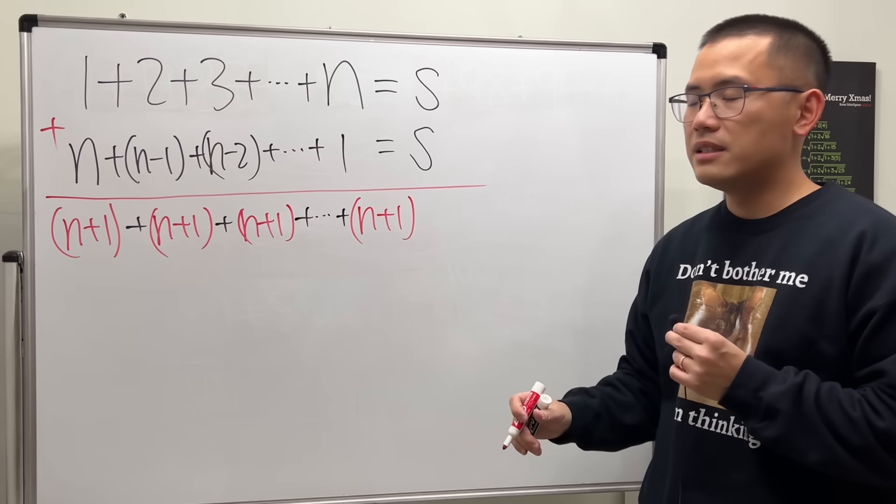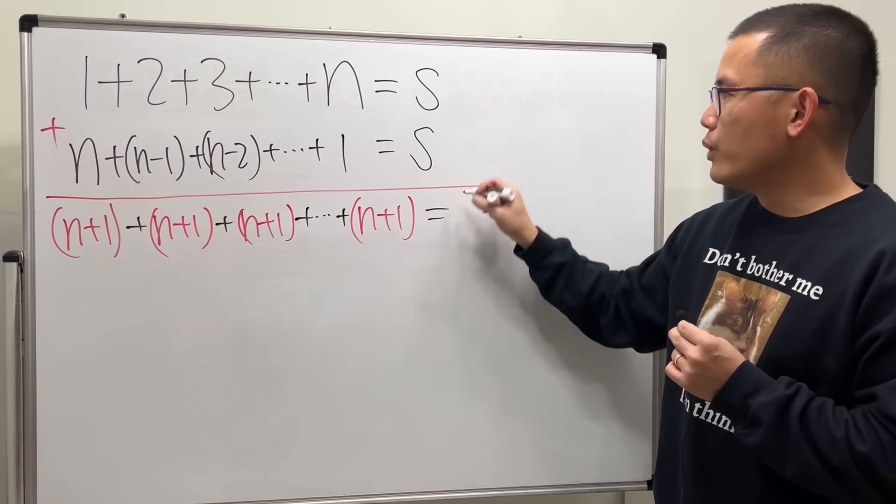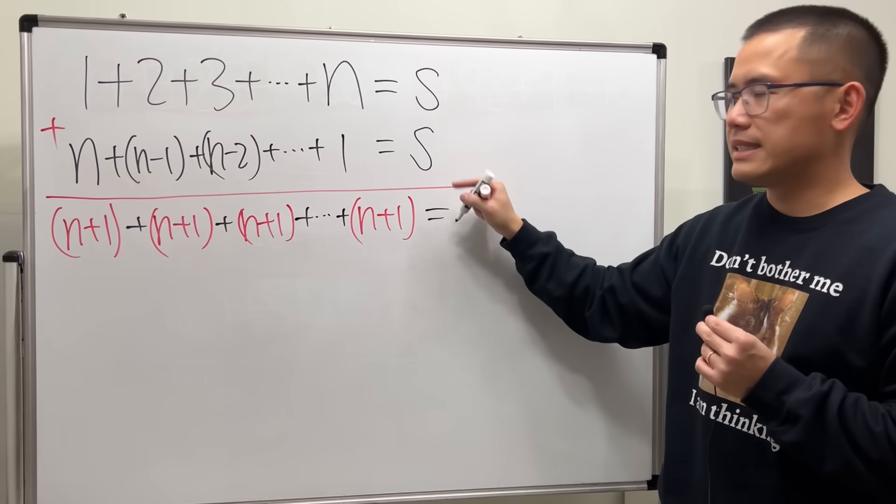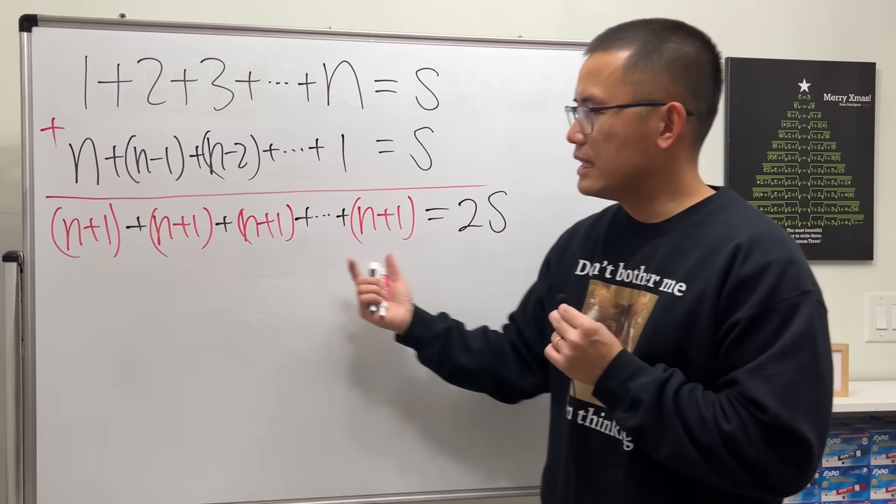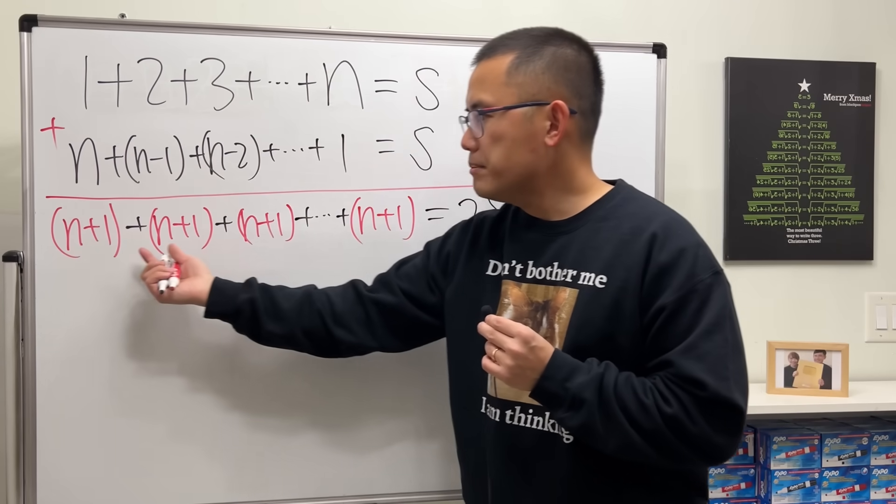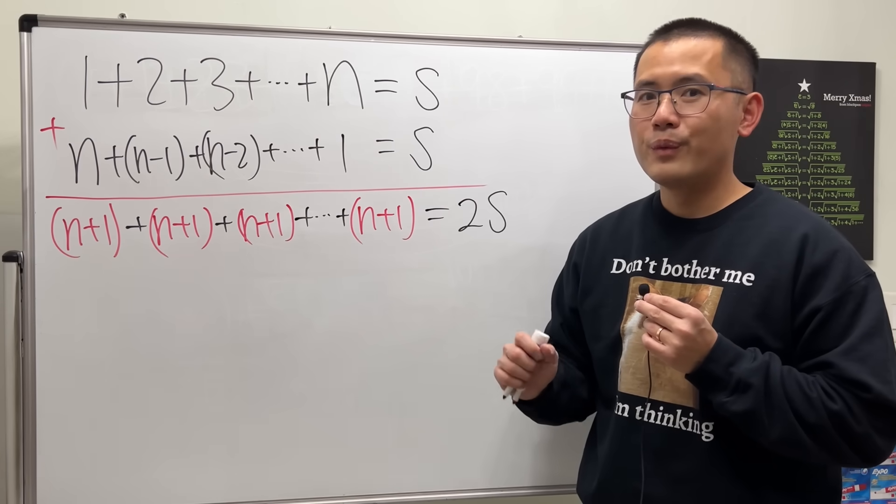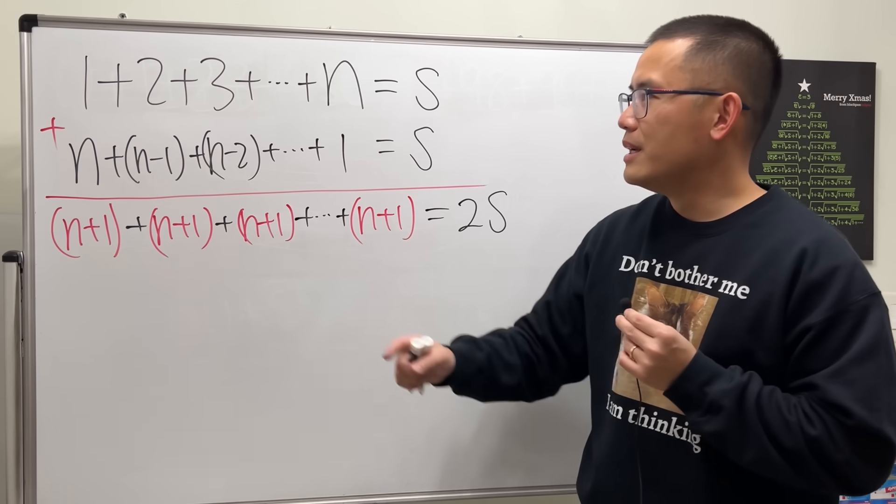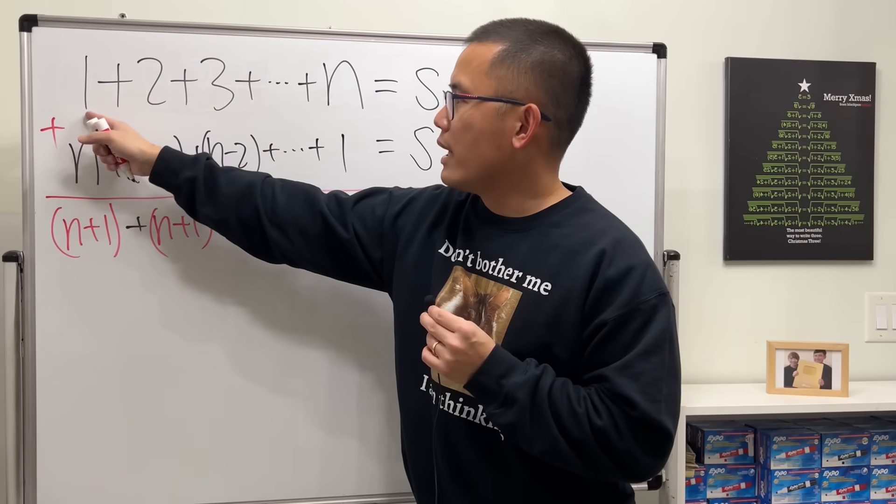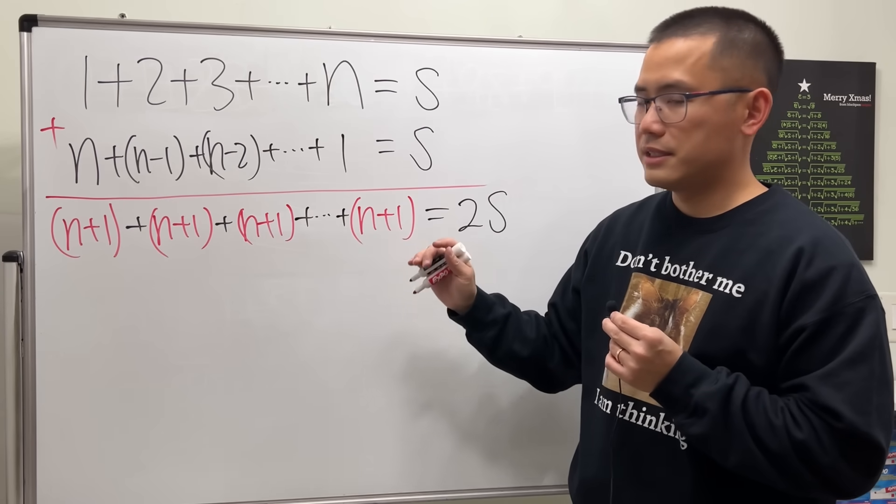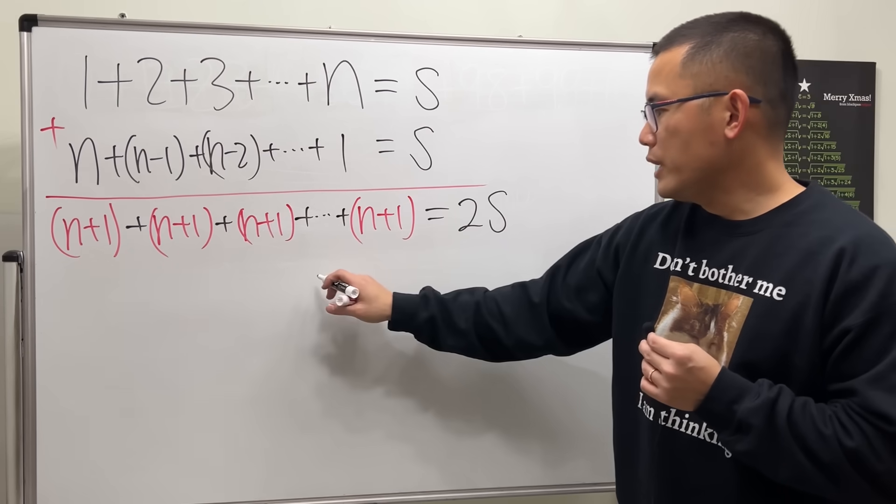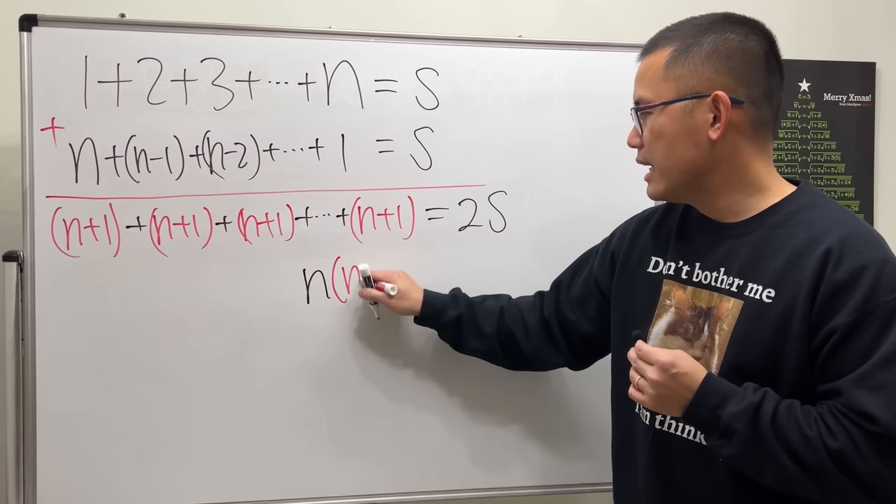Now on the left-hand side, how many of the n + 1 do we have? Well, in this case we have n of them, because you see we started at 1 and all the way to n, right? So we have n pairs of these things. So we have n times (n + 1), and that's equal to 2S.